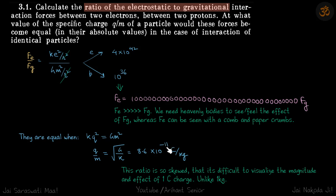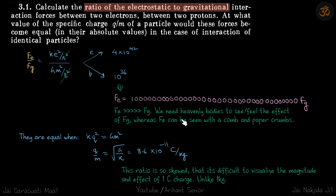You can imagine 11 zeros in the denominator. This ratio is so skewed that it's difficult to visualize the magnitude and effect of one coulomb of charge, unlike one kilogram. We know how one kilogram looks and feels, but one coulomb is such a big unit that it's very difficult to visualize what it can do or how it appears — we can't even imagine it. This question is not really about the math; it's just to get a feel for how powerful electrostatic forces are.